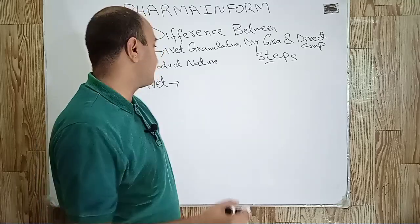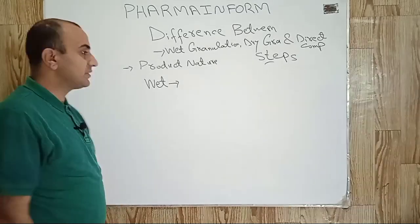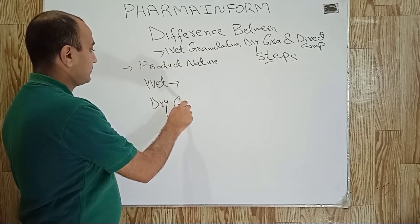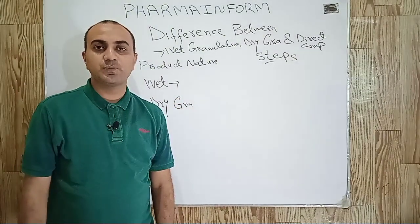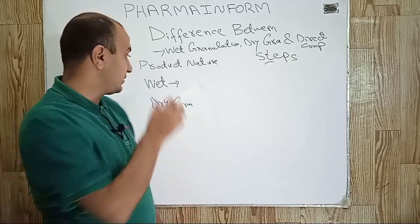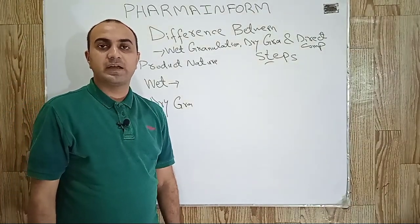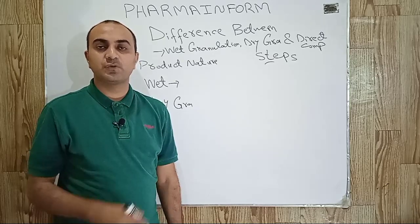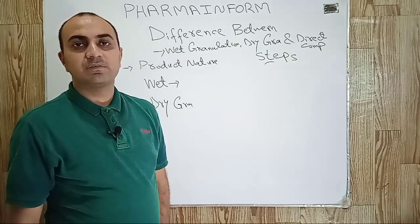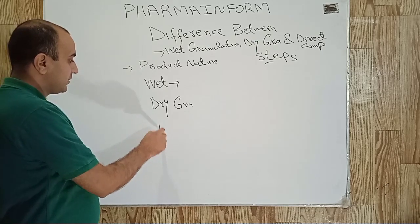Wet granulation is used for products which are not moisture sensitive. For those moisture-stable and heat-stable products, we use the wet granulation method. Dry granulation is used for those products which are sensitive to heat and moisture. For products that are sensitive to heat and water, we cannot use wet granulation, so we use the dry granulation method instead.